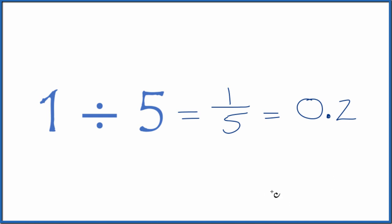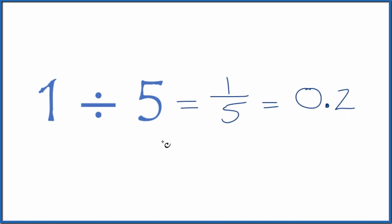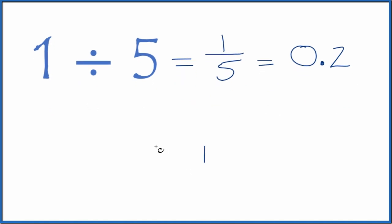You can do this longhand as well. So one divided by five, five doesn't go into one, but we could call this 10 as long as we put a zero and a decimal point up here.